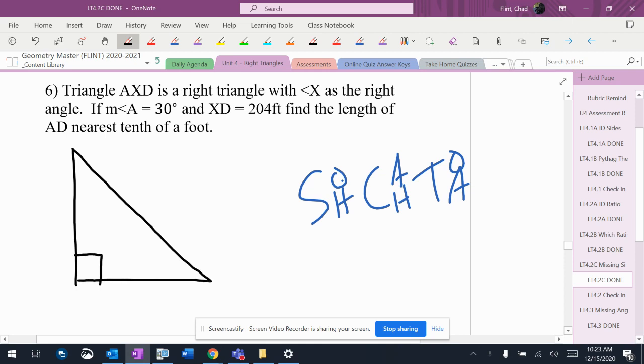So it says I've got a right triangle here. I'm just going to draw my standard right triangle that I usually do. It says X is the right angle. The A and the D, don't matter where you put them, you'll get the same answer.